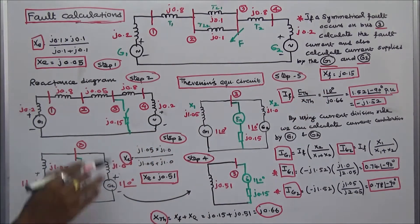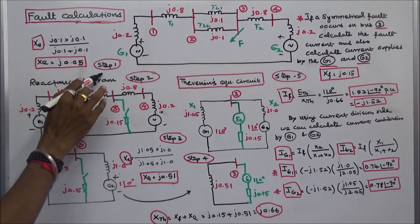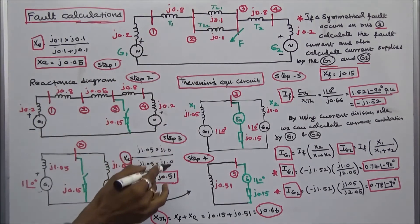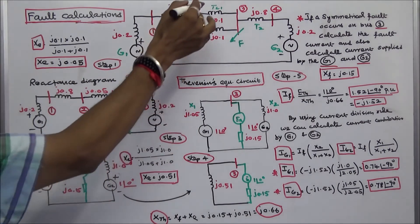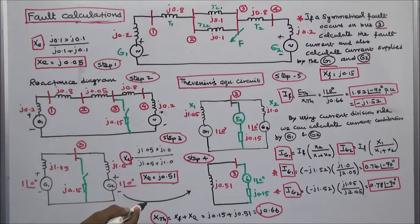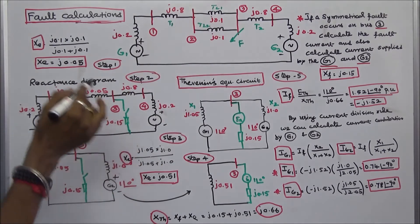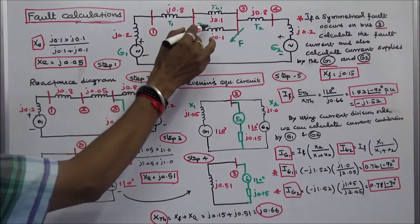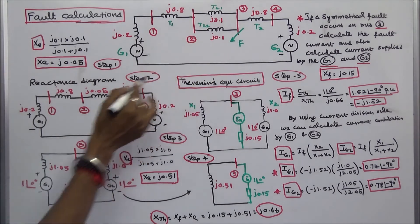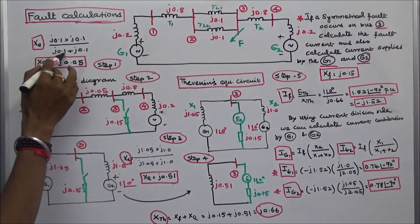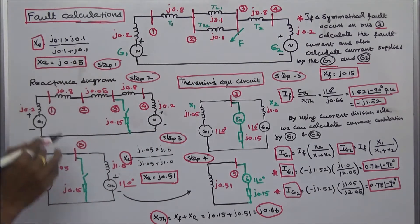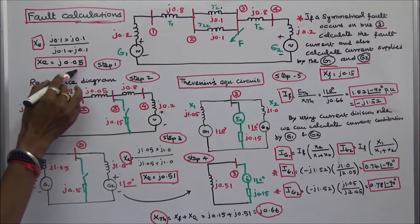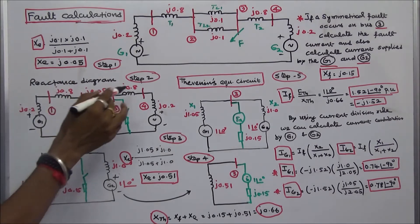Step 1: we have to simplify this network. These two transmission lines are connected in parallel, so we have to find the effective reactance: J0.1 multiplied by J0.1, divided by J0.1 plus J0.1. The effective reactance is J0.05.